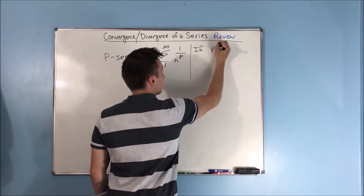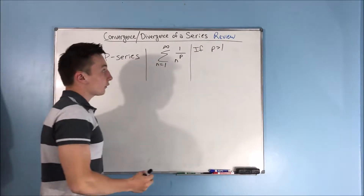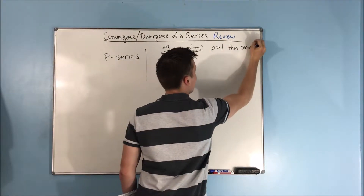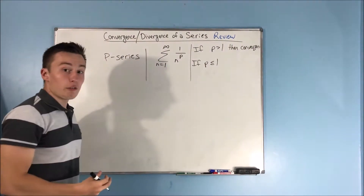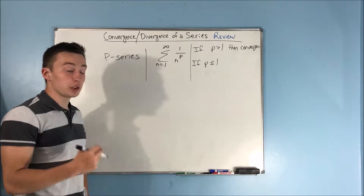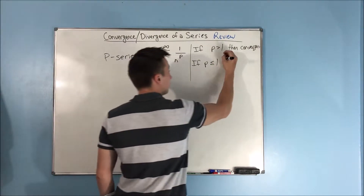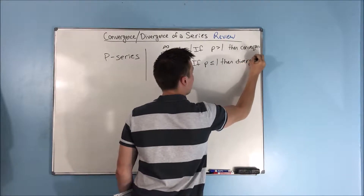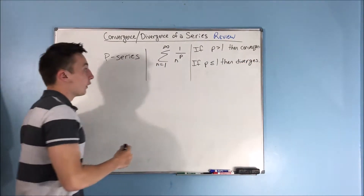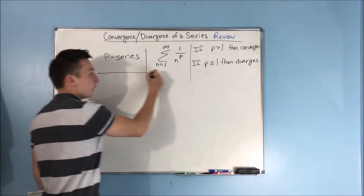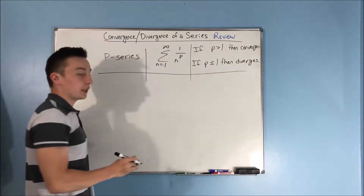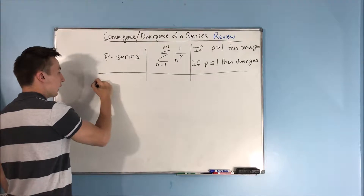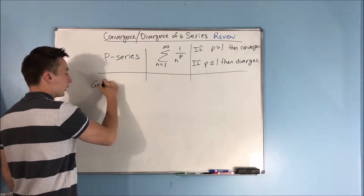If P is greater than 1, then this series converges. However, if that P is less than or equal to 1, then the series is going to diverge. And that is the first of the two popular series that you're going to see a lot and don't really need to use a test for — the second being a geometric series.